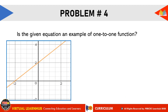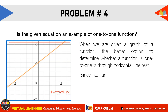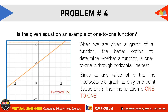For problem number 4: is the given equation an example of a one-to-one function? Since we are given a graph, the better option is to use the horizontal line test. Moving the horizontal line along the y-axis, at any value of y the line intersects the graph at only 1 point — there is only 1 value of y for any value of x. Therefore, the function is one-to-one.